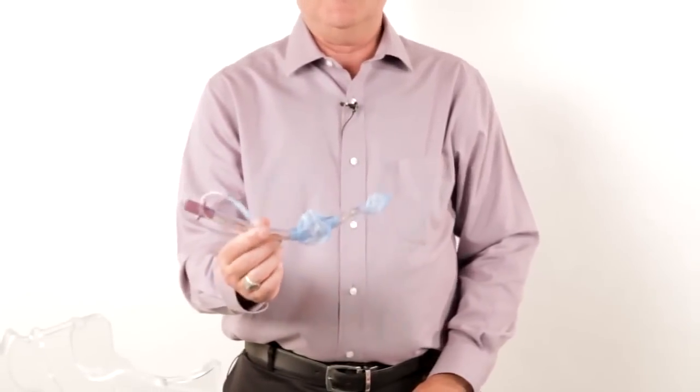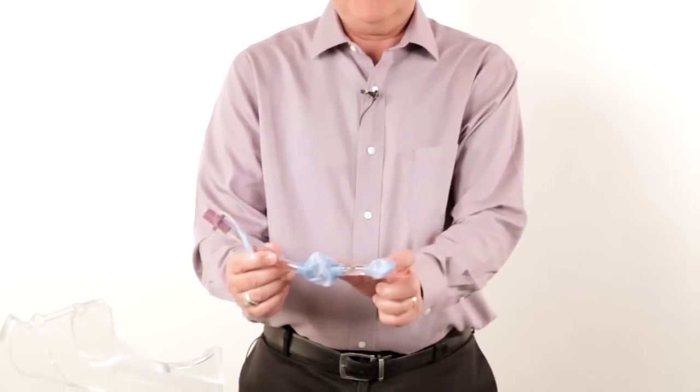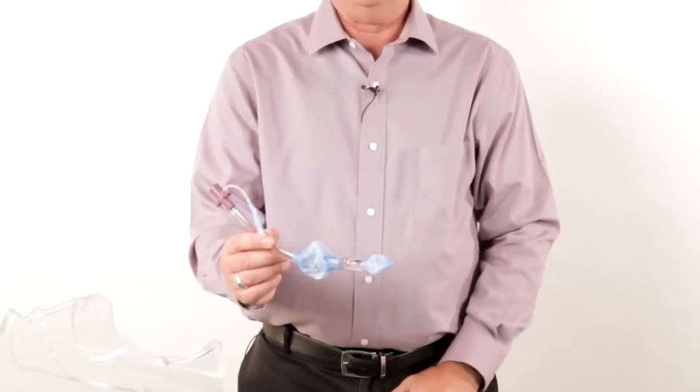It's available in two iterations. The original version was just a single lumen. It's actually the King LTD, laryngeal tube disposable. It has two cuffs and ventilatory openings in between.